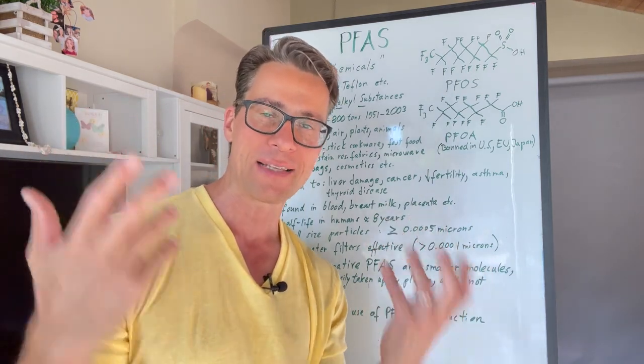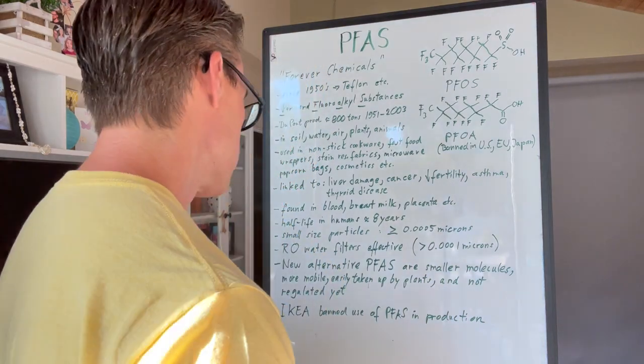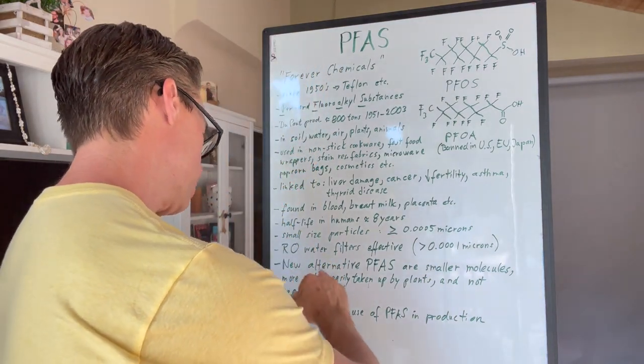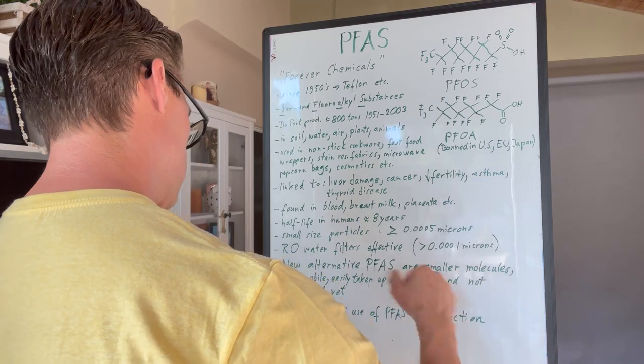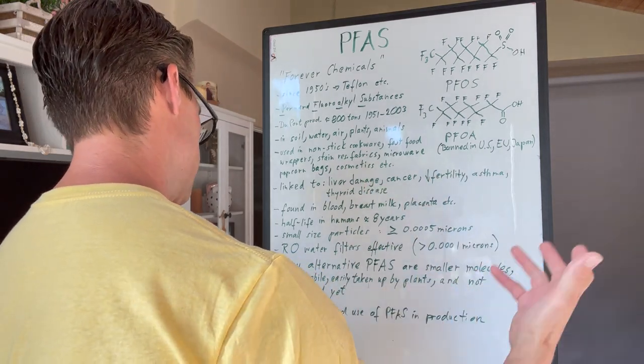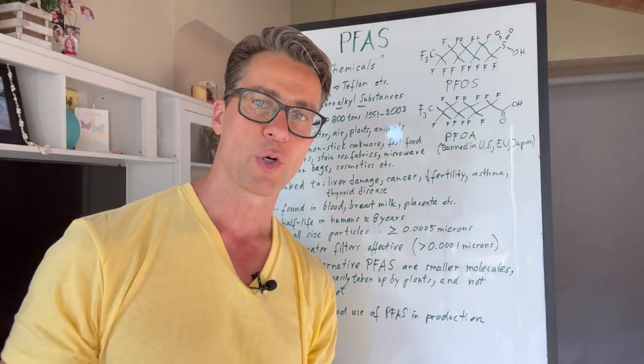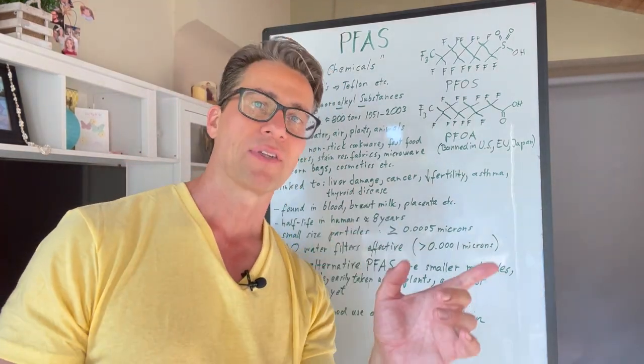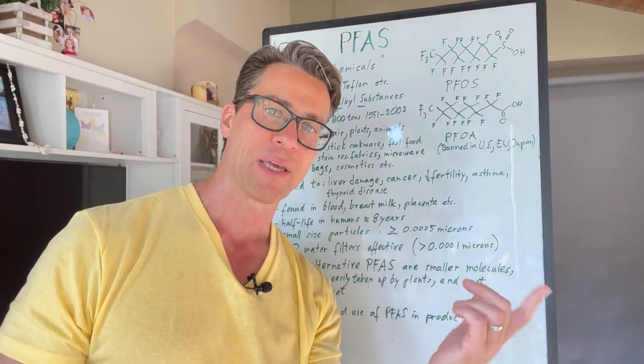So again, they're making new alternative PFAS, and they are smaller, which is worse—they're more mobile, easier taken up by plants, and they're not regulated yet. And that's kind of how the industry works. Again, I gave you the example of BPA—now we have BPS, BPF—and it's the same thing here.